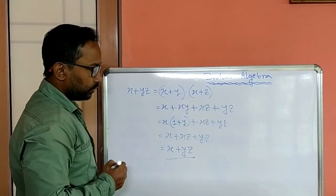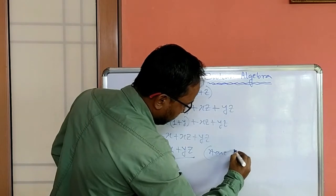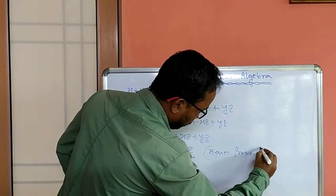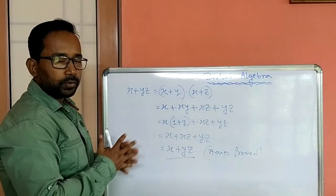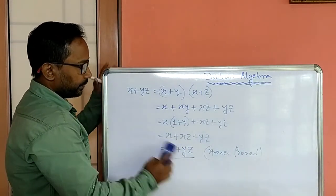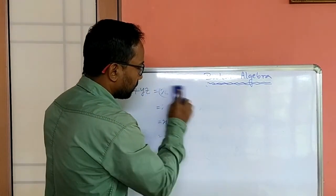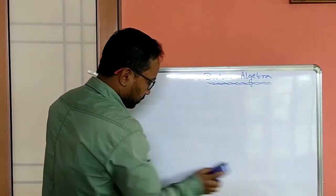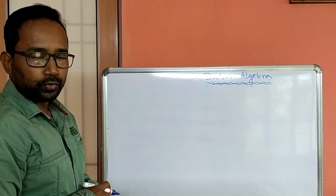We got the left hand side. So this is the proof of a boolean equation using boolean algebra. Now one more we will solve, that is also one proof.